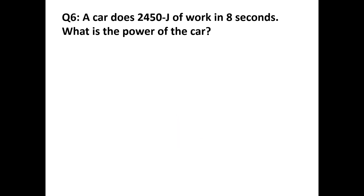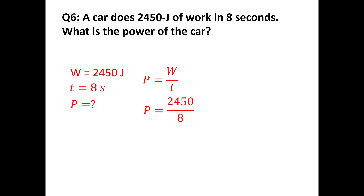Example: A car does 2,450 joules of work in 8 seconds. What is the power? We're given work and time, so we go straight to P = W/t. No rearranging required. The answer is 306 watts.